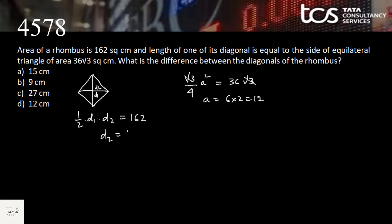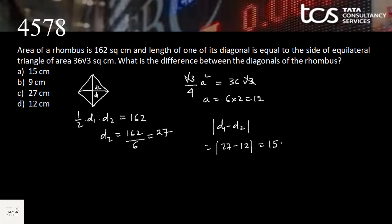One diagonal d1 = 12. So ½ × 12 × d2 = 162, giving 6 × d2 = 162, therefore d2 = 27. The two diagonals are 12 cm and 27 cm. The difference between the diagonals is 27 − 12 = 15 centimeters. Option A is the answer.